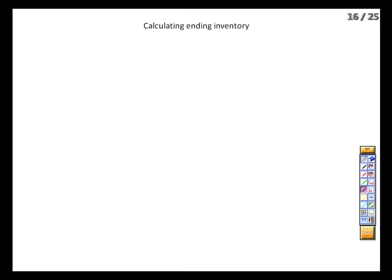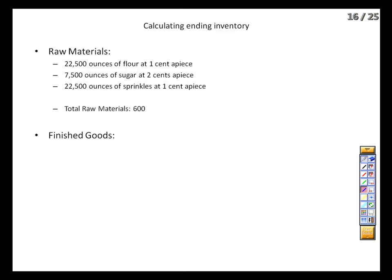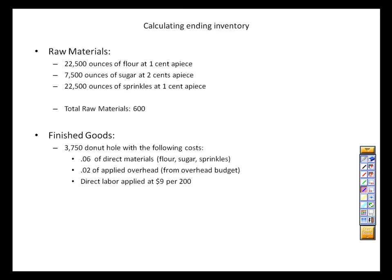Now we have to work out inventory. We'll have both raw materials and finished goods. From the materials budget, we end with 22,500 ounces of flour, 7,500 ounces of sugar, and 22,500 ounces of sprinkles at 1, 2, and 1 cent respectively — $600 of raw materials inventory. For finished goods, we apply the same costing as the income statement: 3,750 ending units at 6 cents direct materials, 2 cents applied overhead, and $9 per 200 units for direct labor. Adding those up gives $469 of finished goods, and a total ending inventory of $1,069.